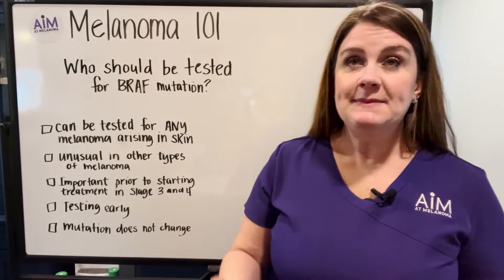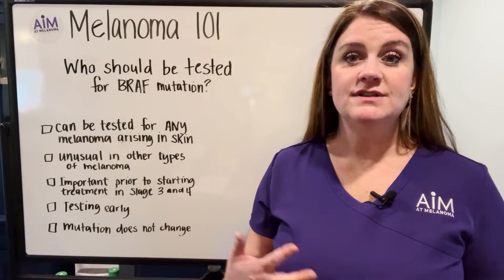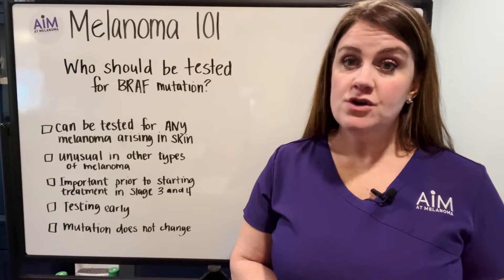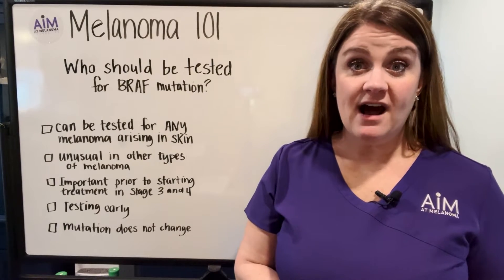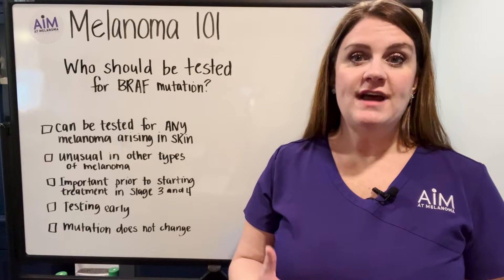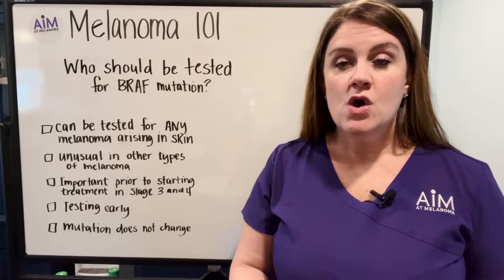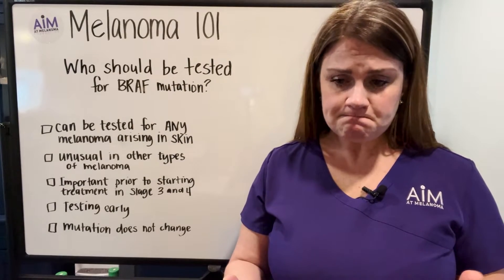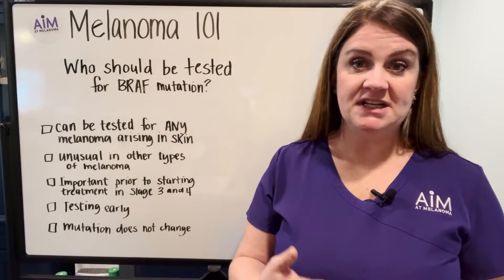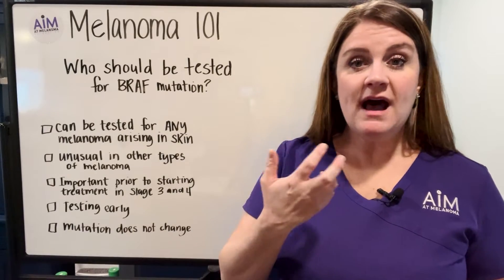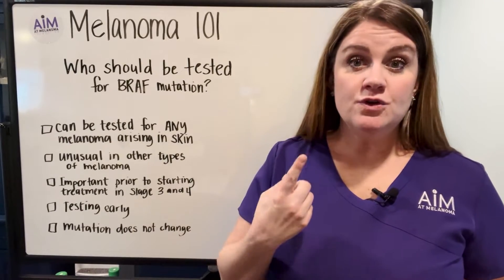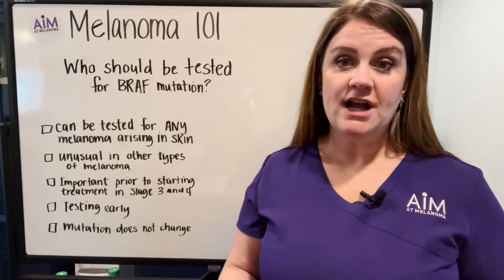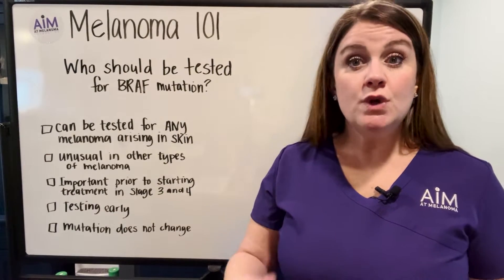We don't typically see the BRAF mutation present in other types of melanoma. Those other types include ocular melanomas or melanomas arising from the eye, hand and foot melanomas which are called acrolentiginous melanomas, or in melanomas that are arising from the mucosal surface. The mucosal surface includes essentially the inside lining of your mouth, the inside lining of your nose, the inside lining of your anus, rectum, or your vagina.